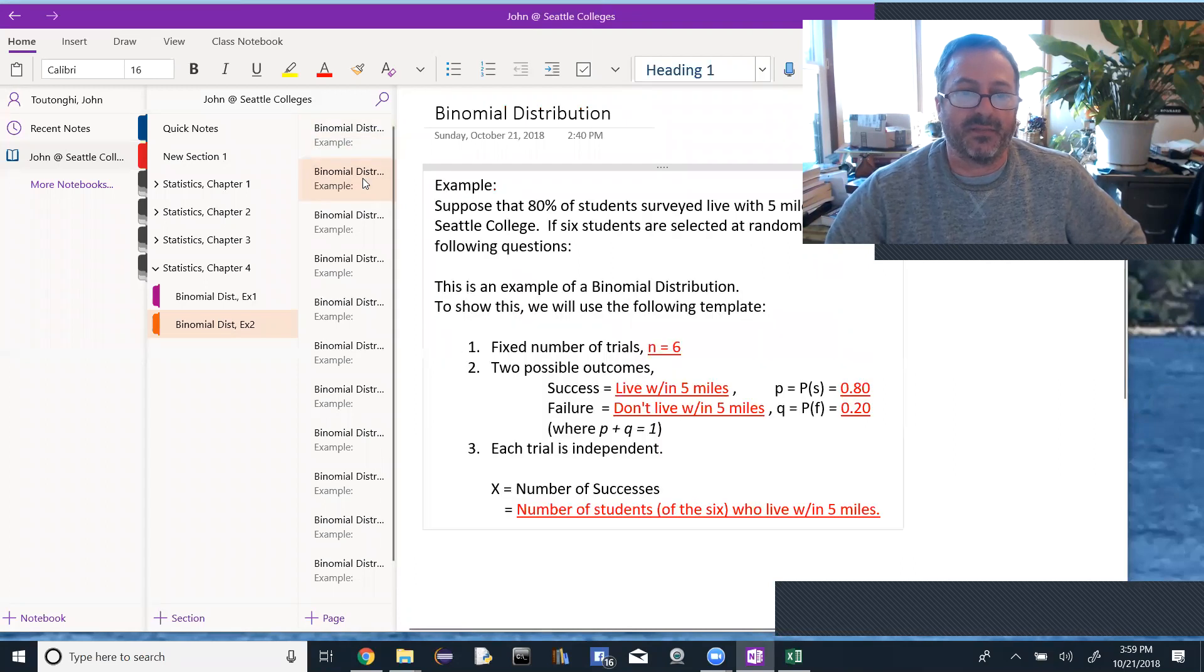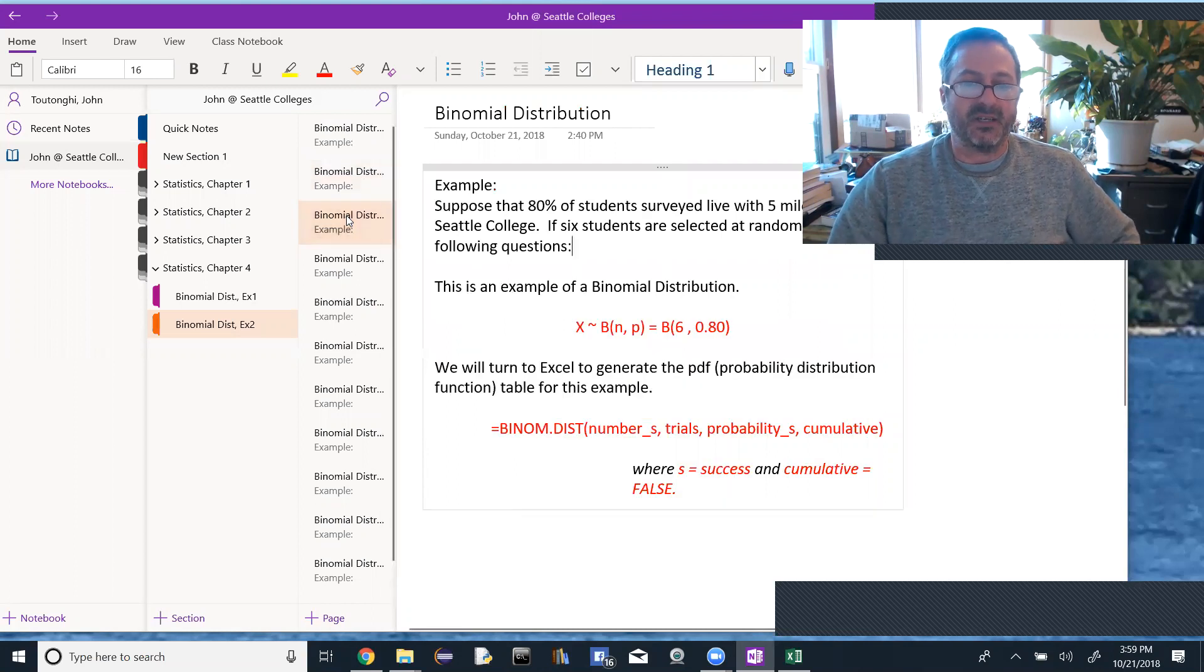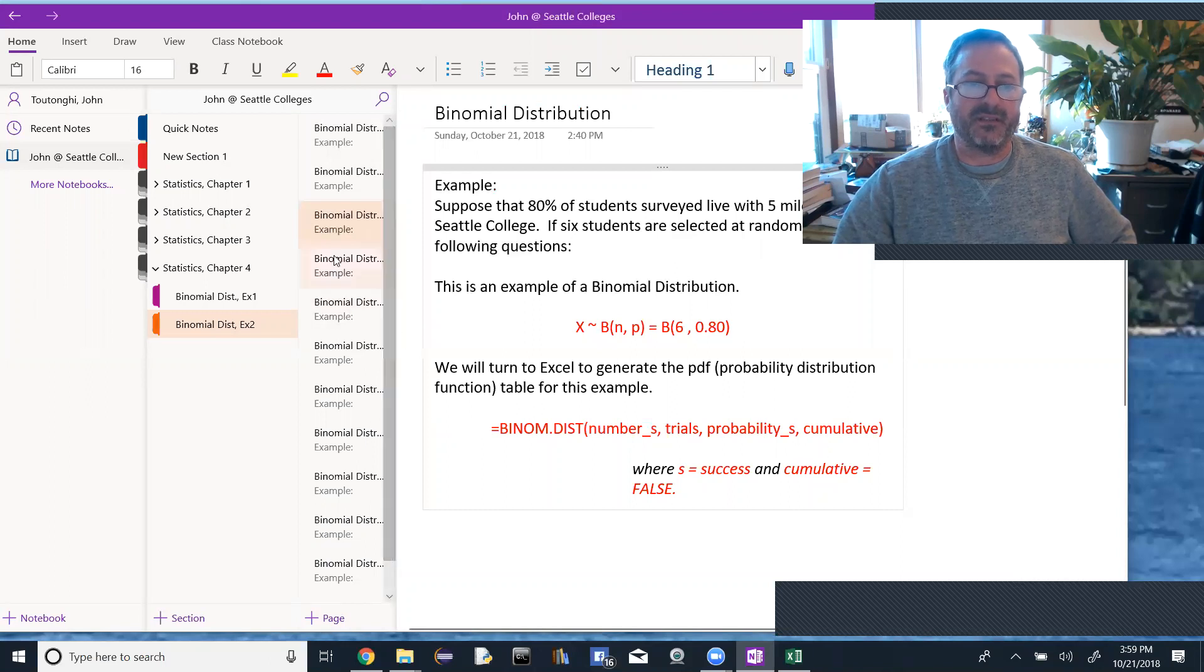Luckily, we've already done that, so I'll just flip through and we fill in the template. There are six students, the probability of success 0.80, probability of failure 0.20, and X is the number of students who live within five miles. So that's a binomial distribution with n=6 and p=0.8, and in Excel, binomial.dist where cumulative is false.